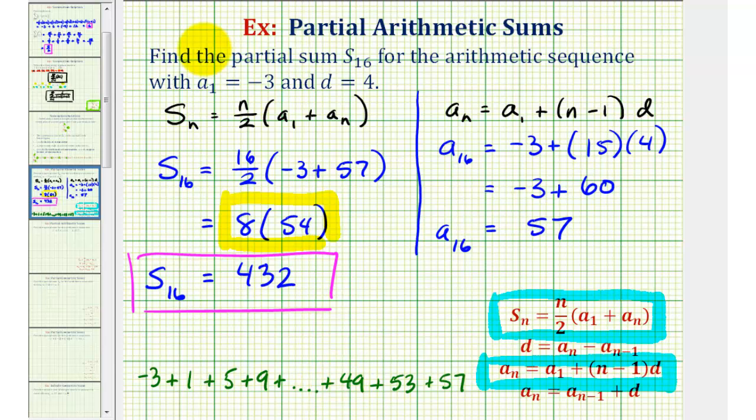So this 54 came from pairing up these sums. Notice if we sum negative three and 57, that's 54. If we pair one and 53, that's equal to 54. If we pair five and 49, that's equal to 54.